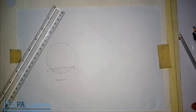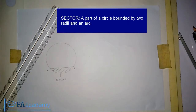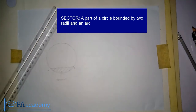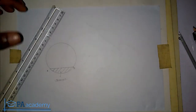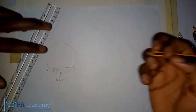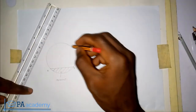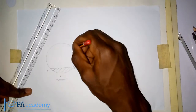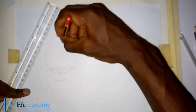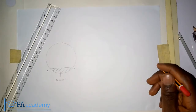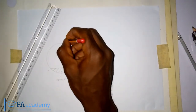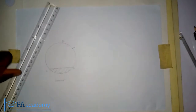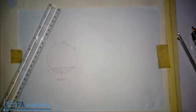Now let's look at a sector. A sector is a part of a circle bounded by two radii and an arc. So let's pick another arc — from this point to this point — and label them point C and point D. Now we have our arc, so let's draw the two radii.